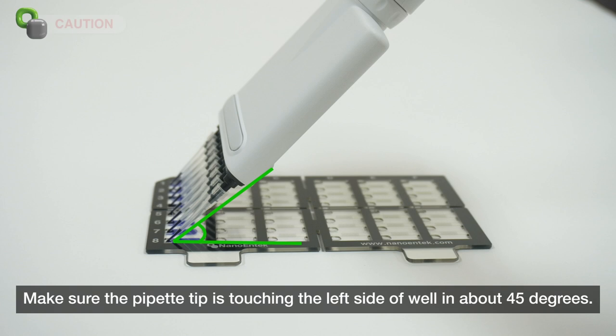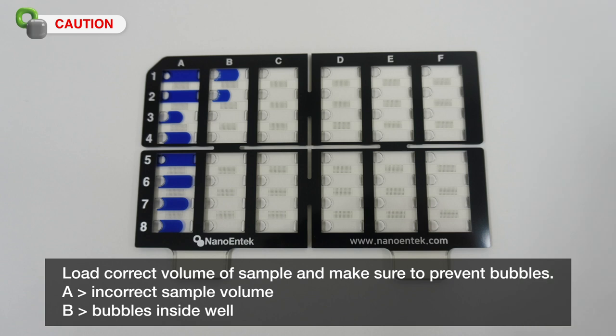Make sure the pipet tip is touching the left side of the well at about 45 degrees. Load correct volume of sample and make sure to prevent bubbles.